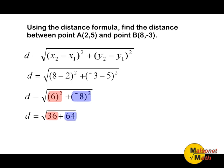After squaring the differences of the x locations and the y locations, you add those two results together. 36 plus 64 is 100. After adding your results together, take the square root of that sum, and that will give you the distance between our two given points. In this case, the square root of 100 is 10.